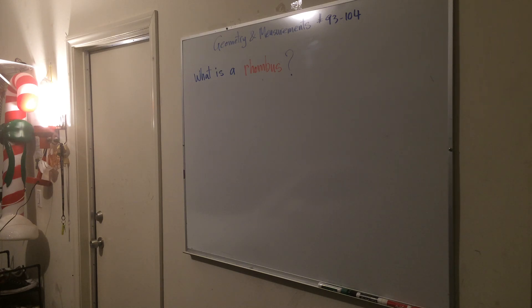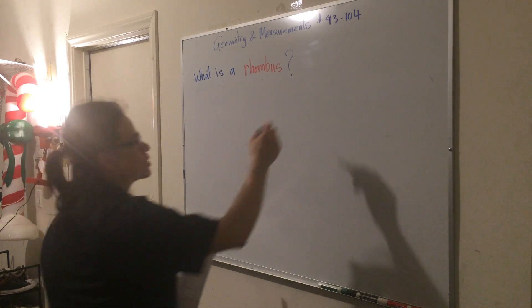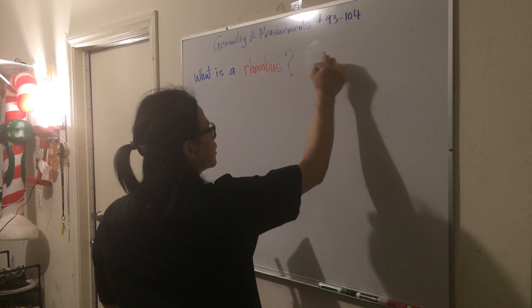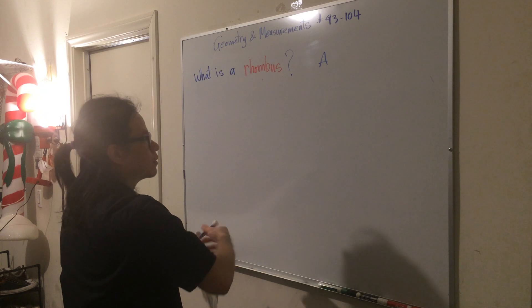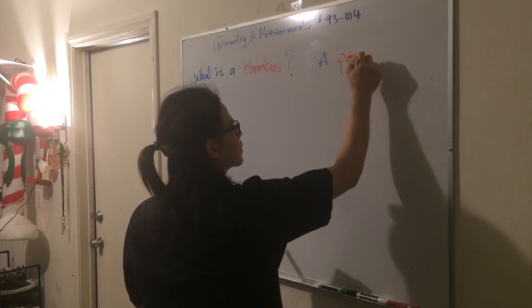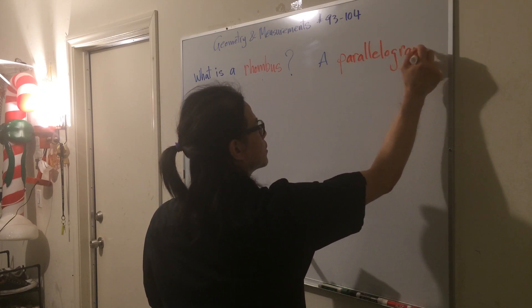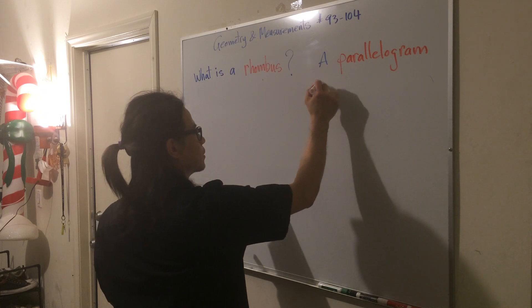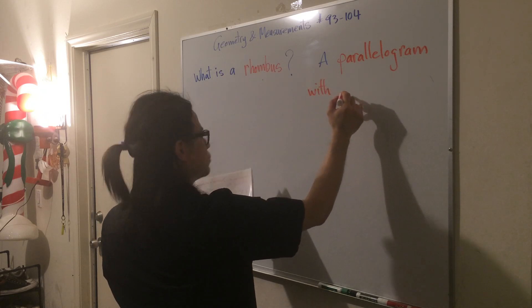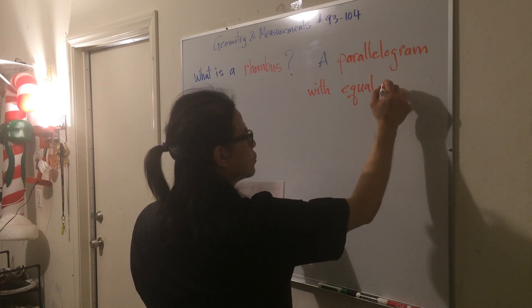Here the question asks, what is a rhombus? Well, by definition a rhombus is a parallelogram with equal sides, meaning all the sides are equal lengths.